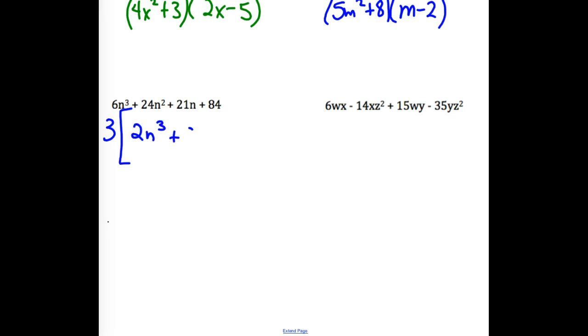What is left if I just factor out the 3? 2n cubed, 8n squared, 7n, 28. Now, we still have four terms, right? Can we use grouping on those four terms? The 3 is just going to hang out in front here. So, now if we split it, what's common in the first two? 2n squared. What would be left? n plus 4. And in the second half, what's common? Positive 7. What's left? n plus 4.